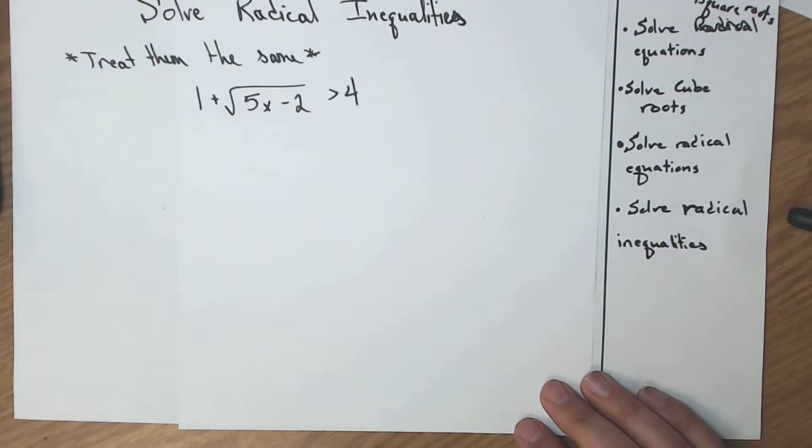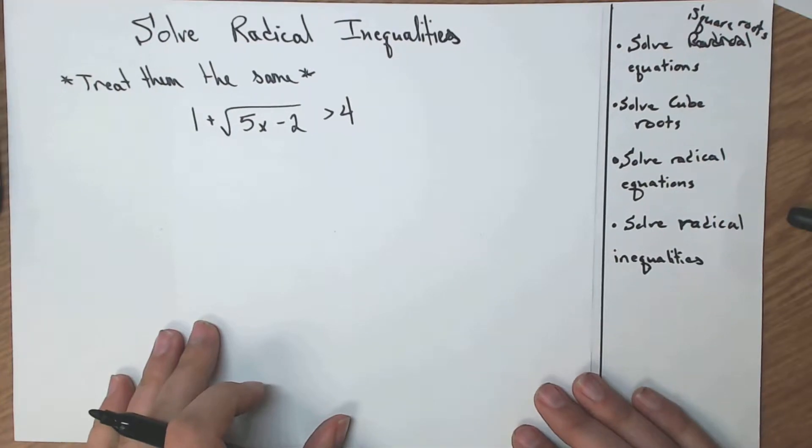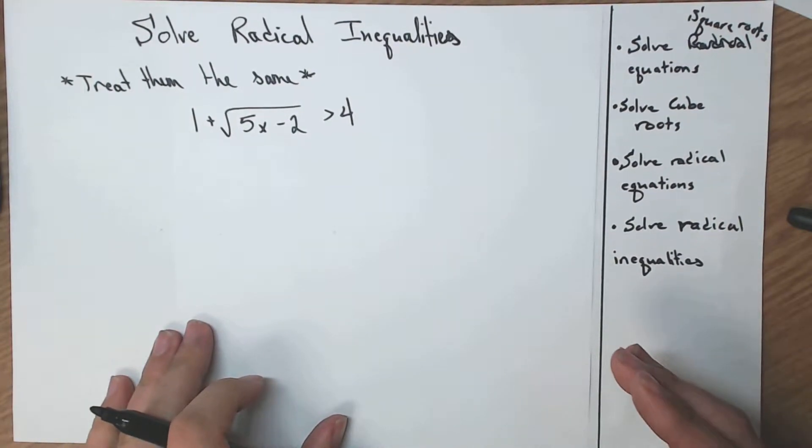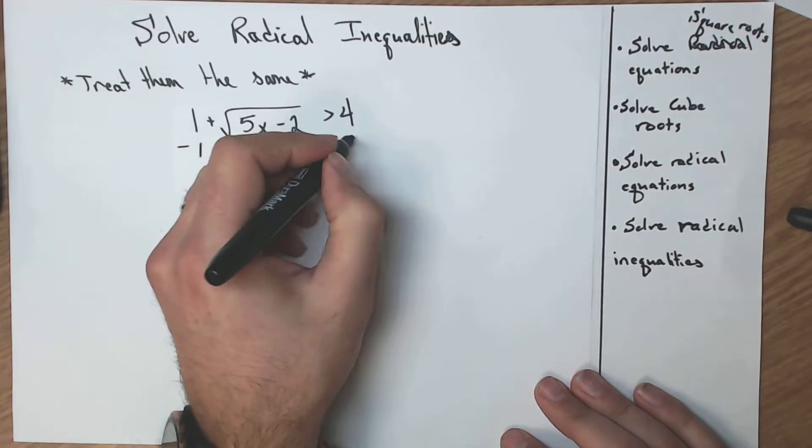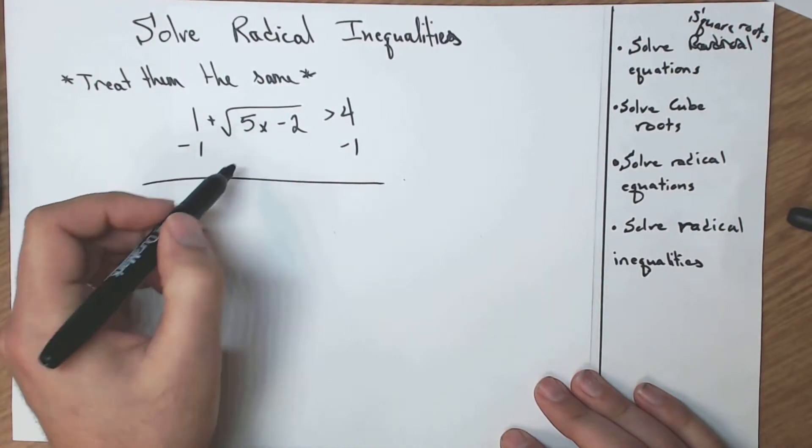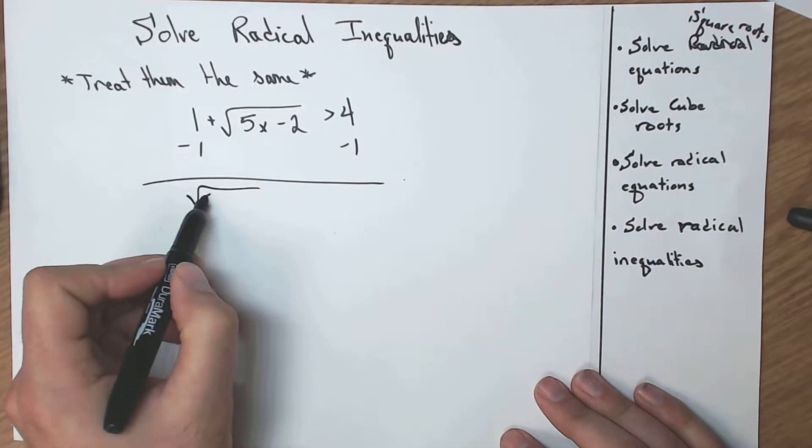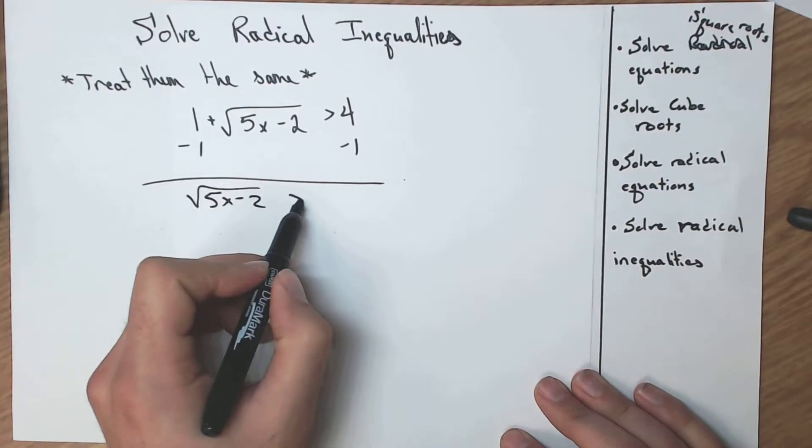Next one, inequalities. It's our last one. It's our exciting one. We treated exactly the same as everything else. Nothing fancy about it, actually. Subtract the 1 on both sides to isolate our square root. So now I have the square root of 5x minus 2 is greater than 3.